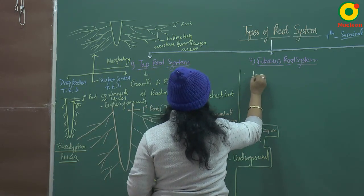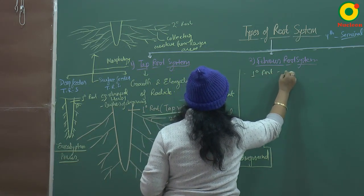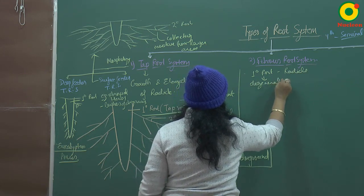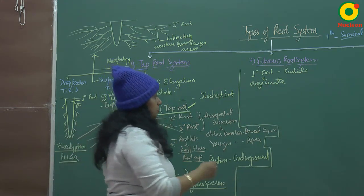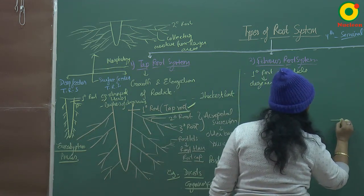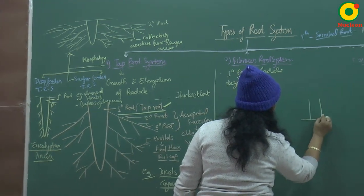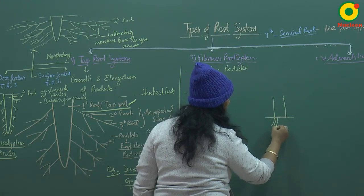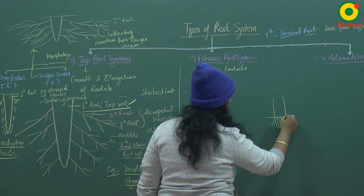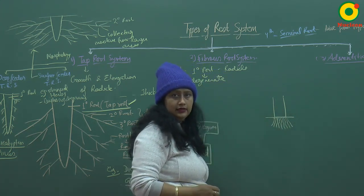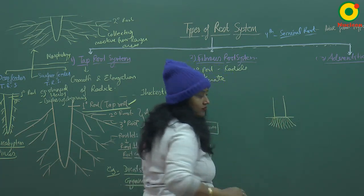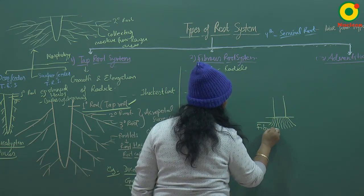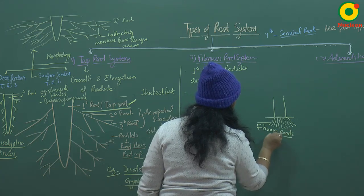In fibrous root system, the primary root arises from the radicle but then degenerates. From the base of the stem, many fine, thin, fiber-like roots arise. That is why they are known as fibrous roots. Regarding their thickness — tap roots are the thickest roots, whereas fibrous roots are thin roots. Position-wise, they are also underground, present below the ground in the soil.